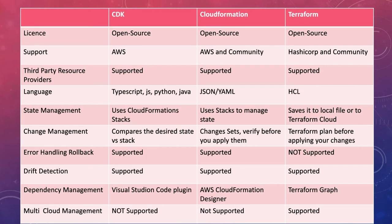Error handling and rollback — whenever a resource is not able to provision or ends up in a bad state, CDK is able to roll it back to the version that was working before. Both CDK and CloudFormation support error handling rollback, but Terraform does not support error handling rollback.